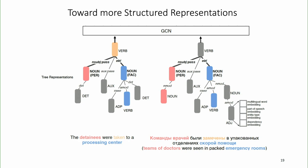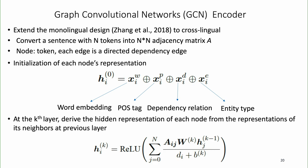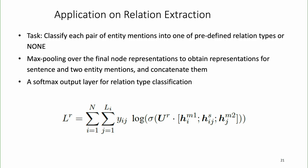We use a graph neural network like GCN to encode the whole graph, borrowing representations from neighbors to represent each node. We consider each sentence as an N×N matrix, with each token initialized using language-universal features: multilingual word embedding, POS tag, dependency relation, and entity type. In the previous layer, we borrow representations of other neighbors in the dependency graph to derive the hidden representation of the current node. This gives a global representation for the whole graph. For relation classification, given two entity mentions, we get graph representations for each entity and the whole sentence, combined to classify into one of the predefined types.